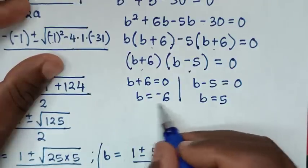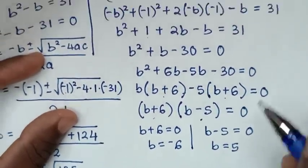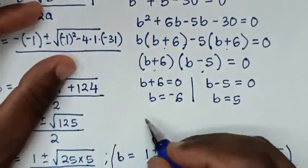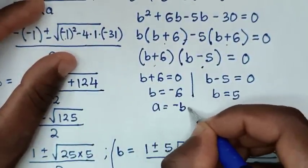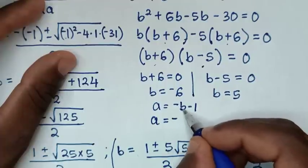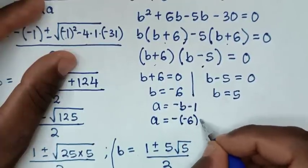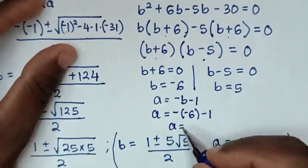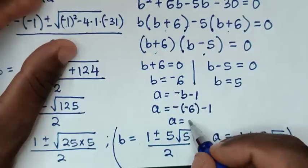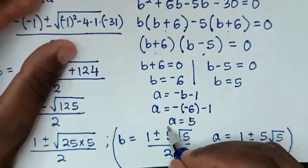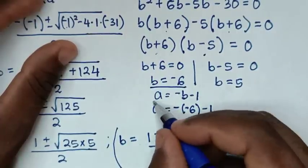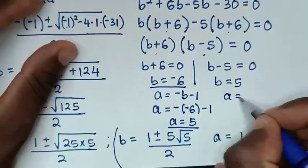From the second solution, a equals negative b minus 1. When b equals negative 6: a equals negative of negative 6 minus 1 equals 6 minus 1 equals 5. When b equals 5: a equals negative 5 minus 1 equals negative 6. So from the second solution we get the pairs: a equals 5 with b equals negative 6, and a equals negative 6 with b equals 5.